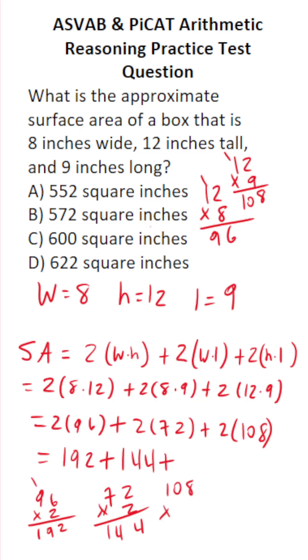And then 2 times 108. 108 times 2. That's 16, carry a 1. That's 0 plus 1 is 1. And then 2 times 1 is 2. Let's add all this up now.